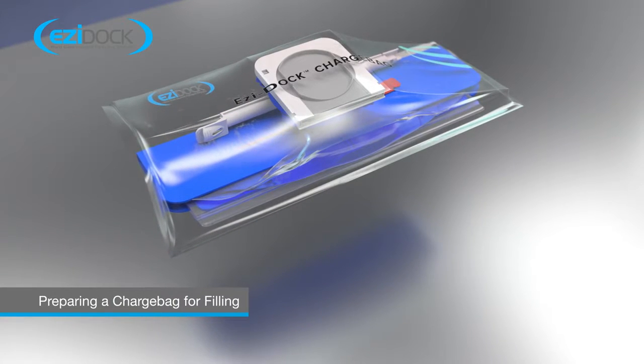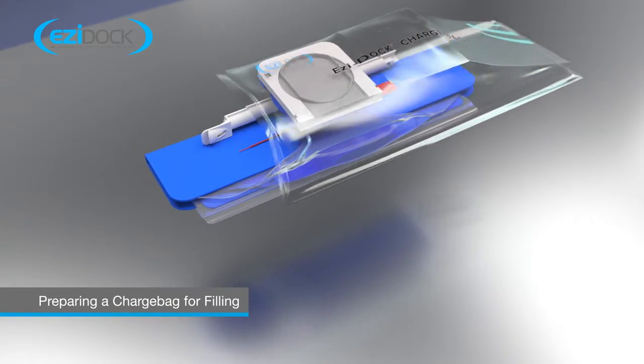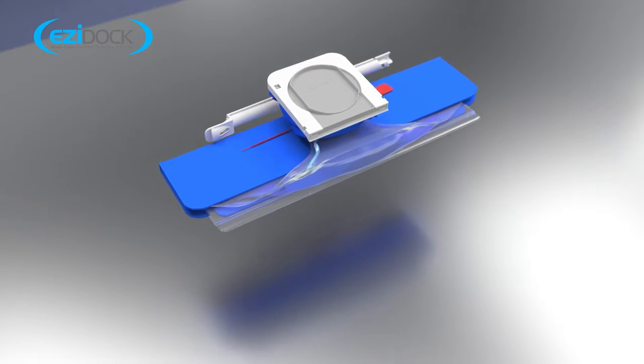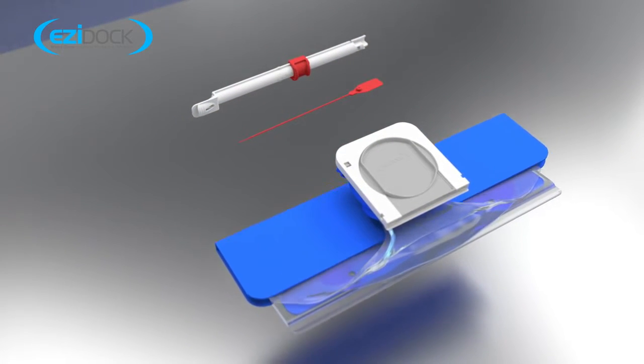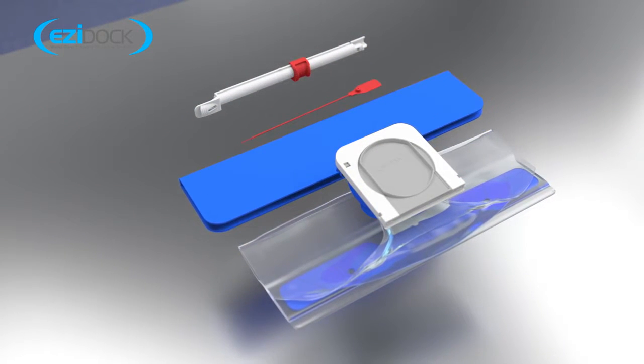First, remove the charge bag, red tamper evident safety seal, and shut-off clamp from the pouch by tearing the perforated seal. The blue protective transit sleeve can be discarded.